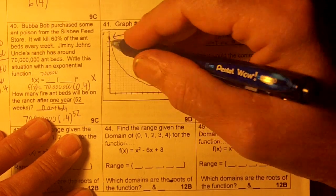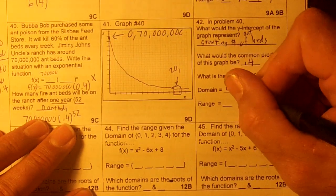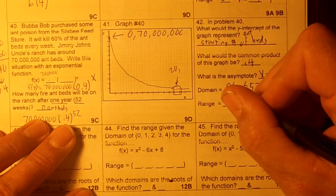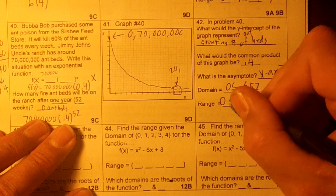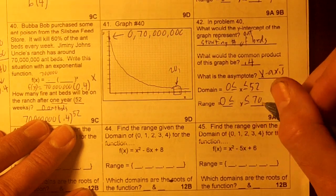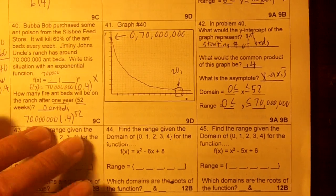The domain is going to go from 0 to 52. And the range is going to go from 70 million, or from 0, from the bottom to the top. 0 to 70 million. Sorry about that, that I typed it in wrong.